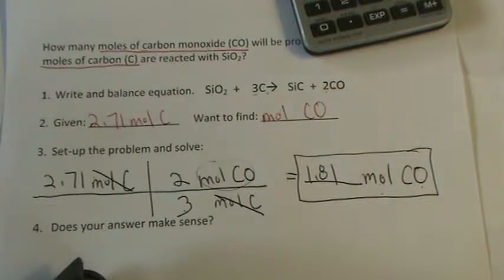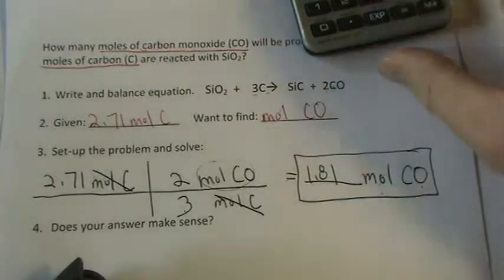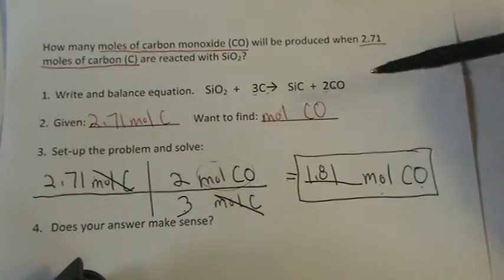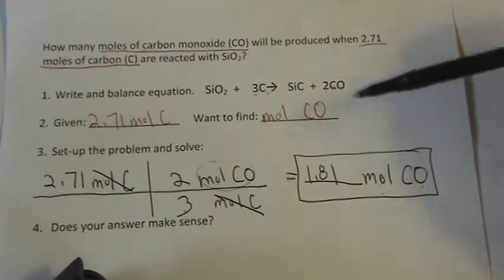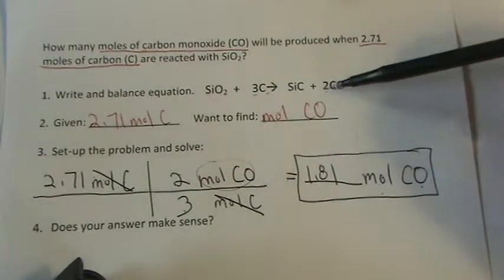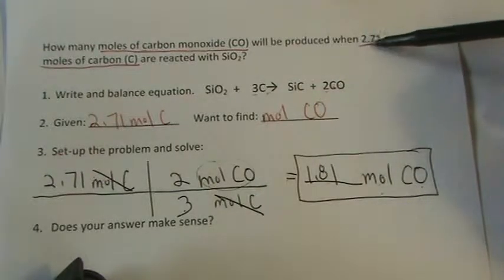Let's see if it makes sense. If I'm going from 3 moles to 2 moles, it's getting less. Not by a lot, it's not even getting cut in half, but it's less. If I go from 2.71, I should end up with about 1.81. That makes sense.